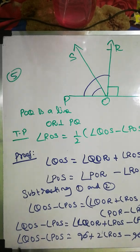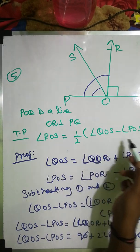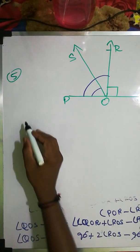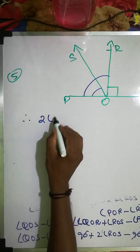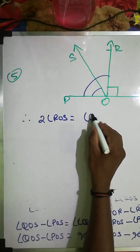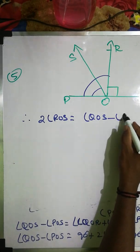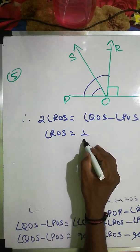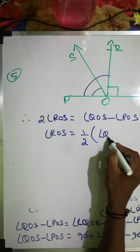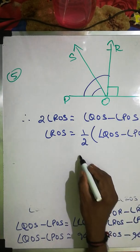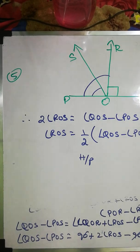Therefore 2 times angle ROS equals angle QOS minus angle POS. Rearranging, angle ROS equals one-half of (angle QOS minus angle POS). Hence proved.